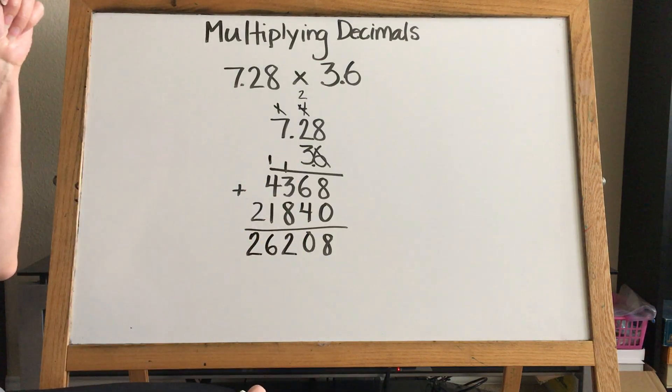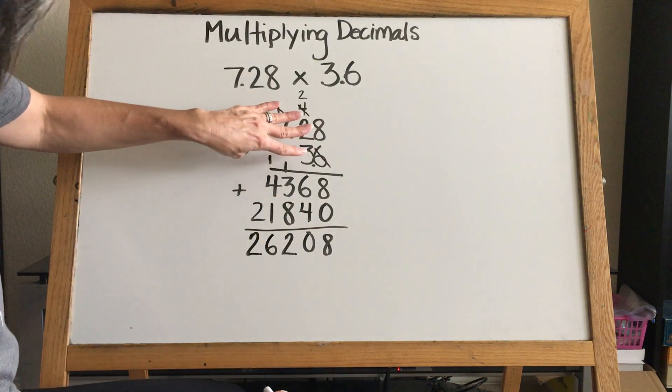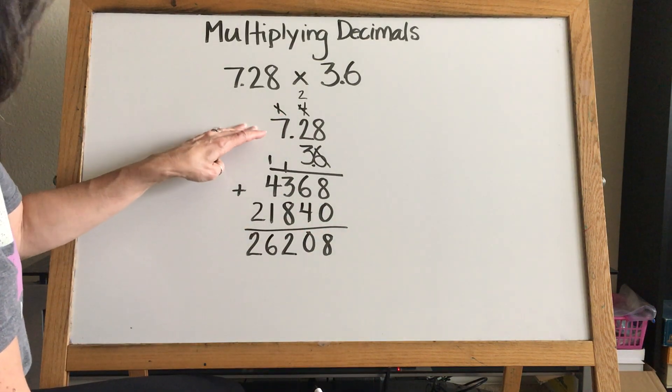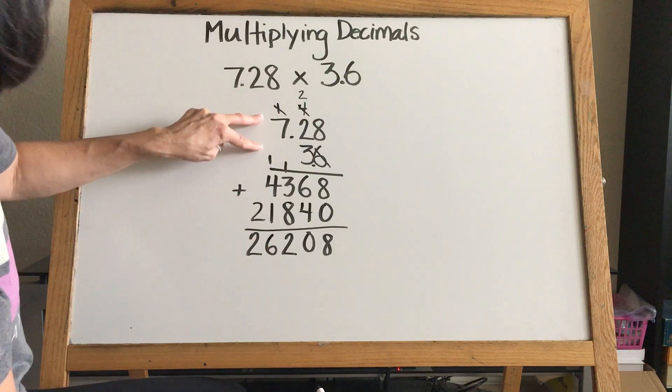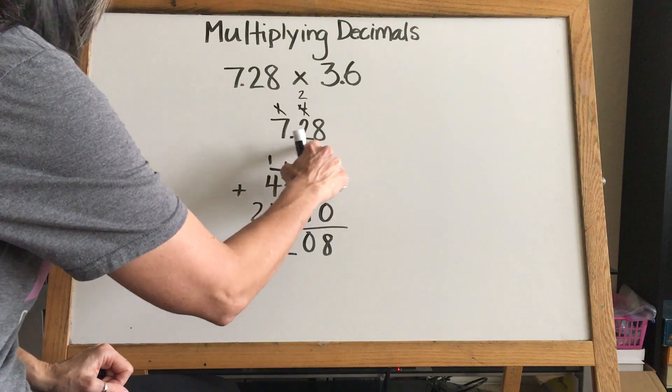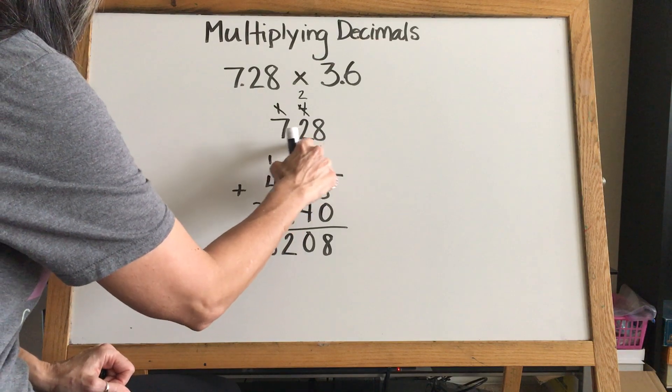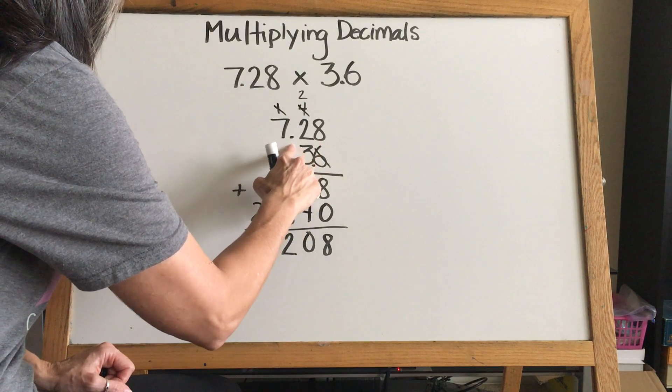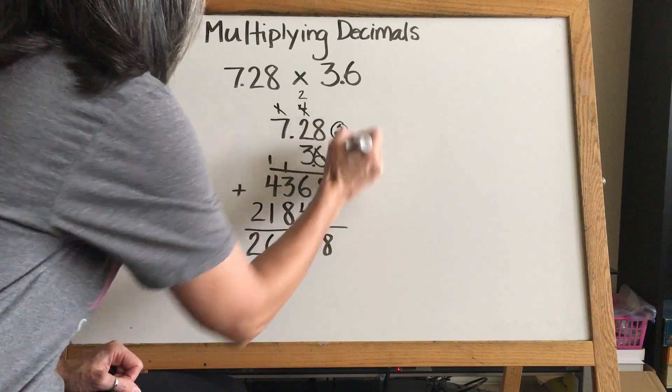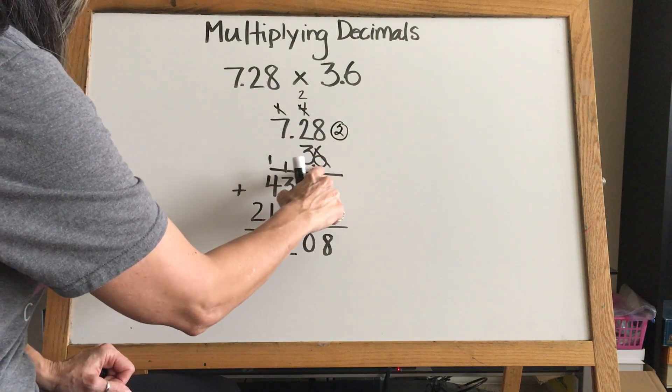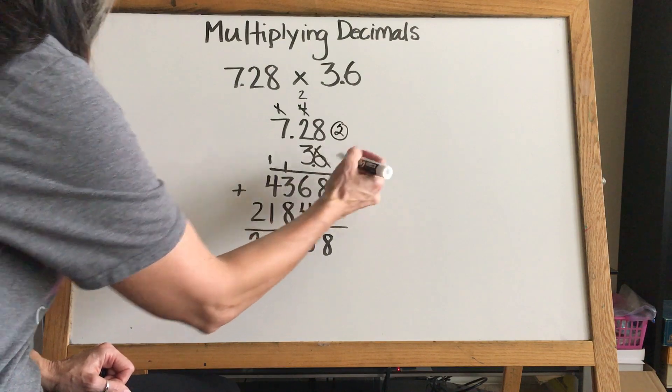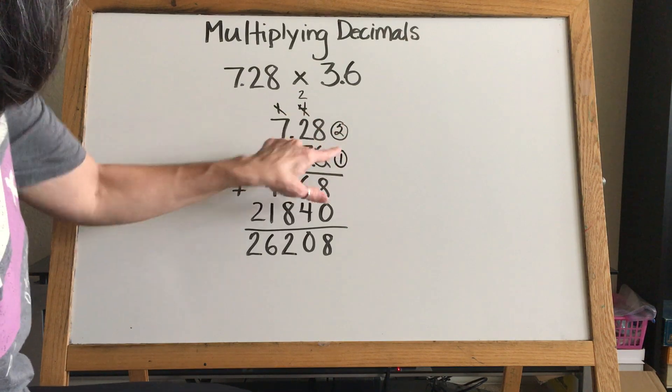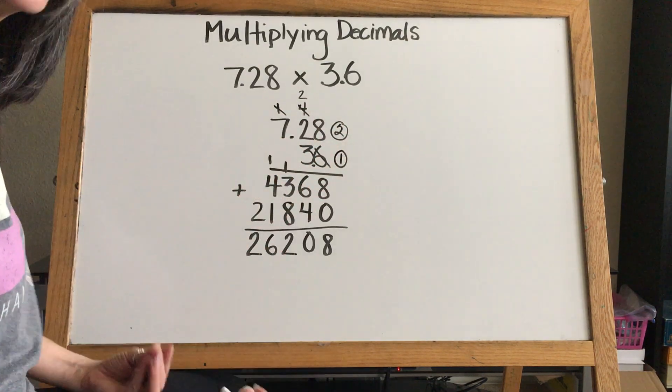If we didn't have decimals up here, our answer would be done and we'd put our comma. But this is what changes our answer. You have to come up to the equation and you see that we have two place values - the tens and the hundreds place - that are after the decimal. So there's two digits that fall after the decimal, so we put a little two. We look at this number, there's one digit - we have a tens place after the decimal - so we're going to put a little one. You're going to add these numbers together and that tells you how many times you're moving your decimal back.